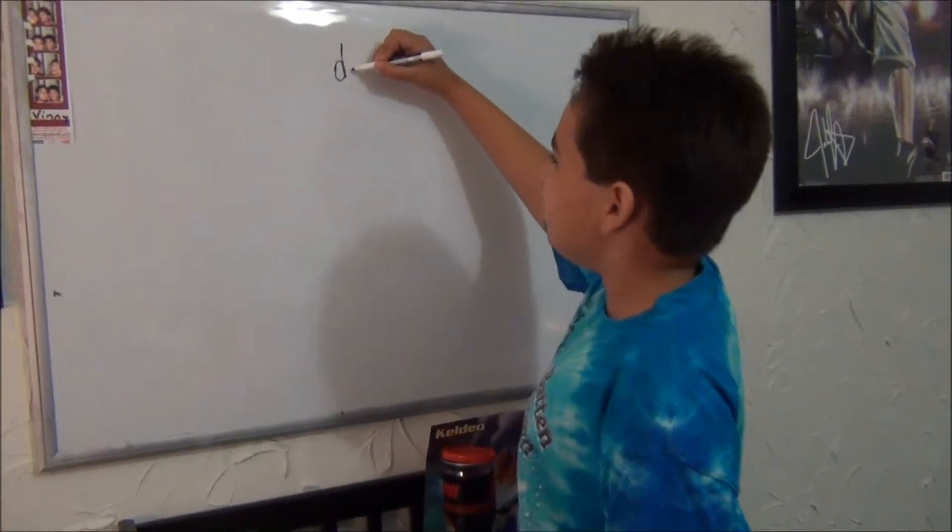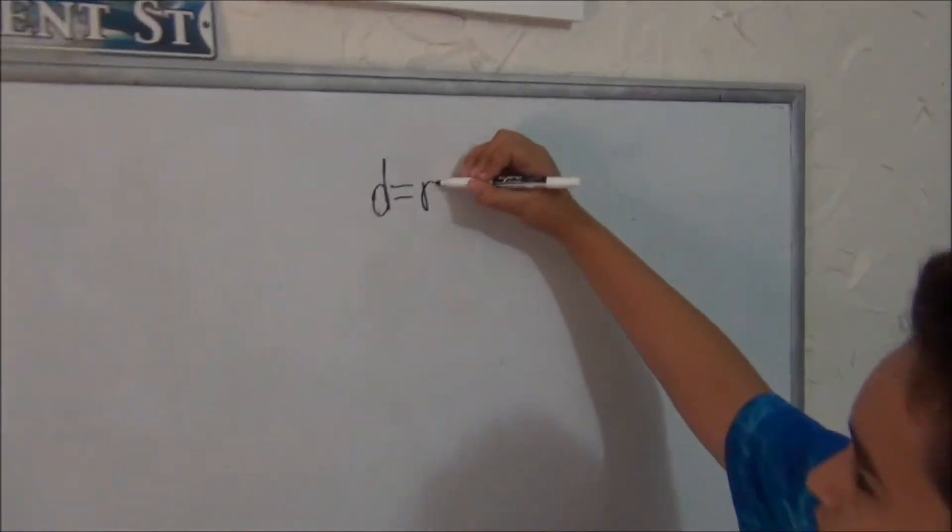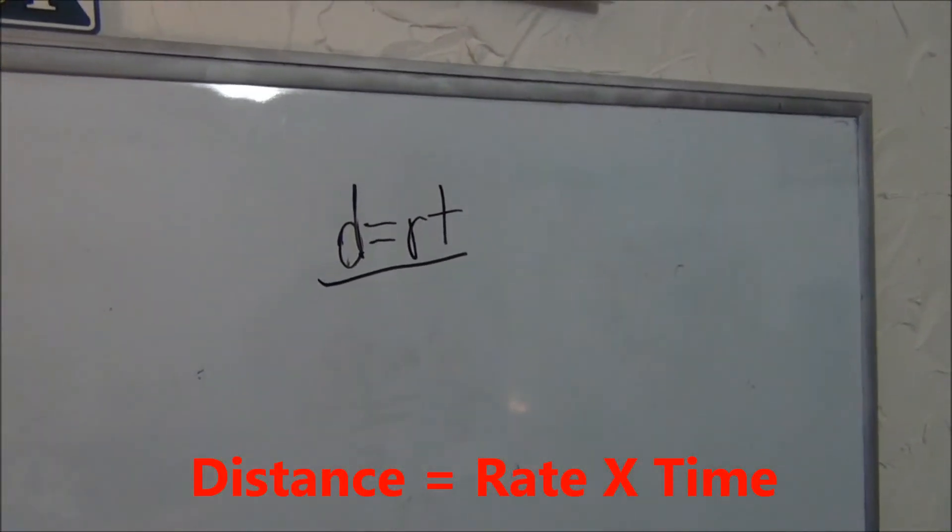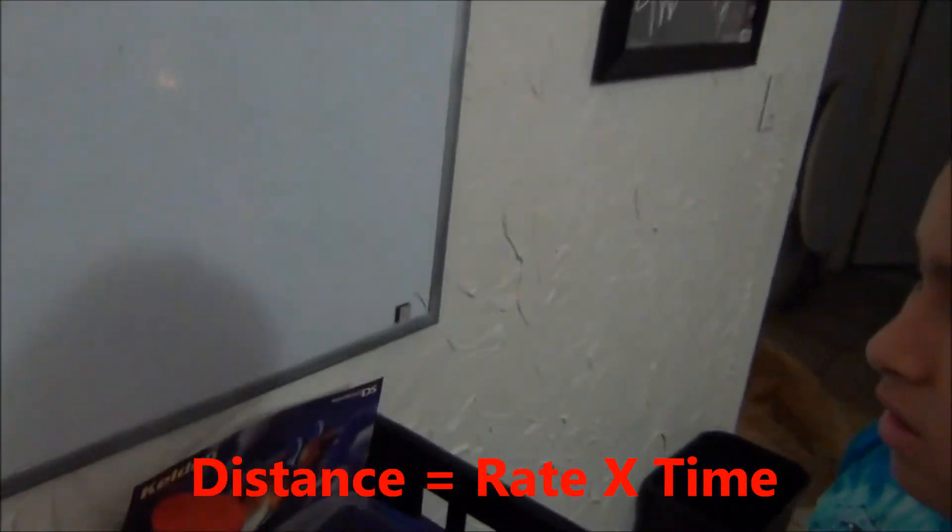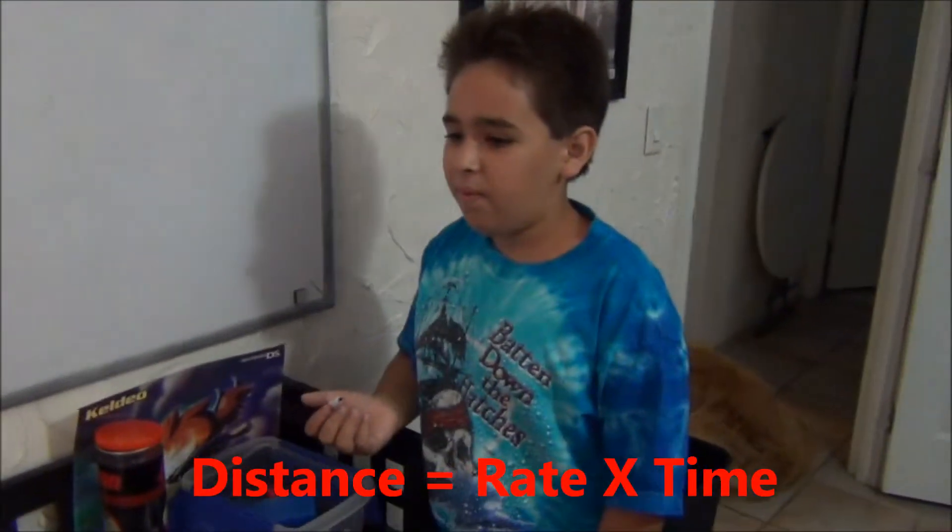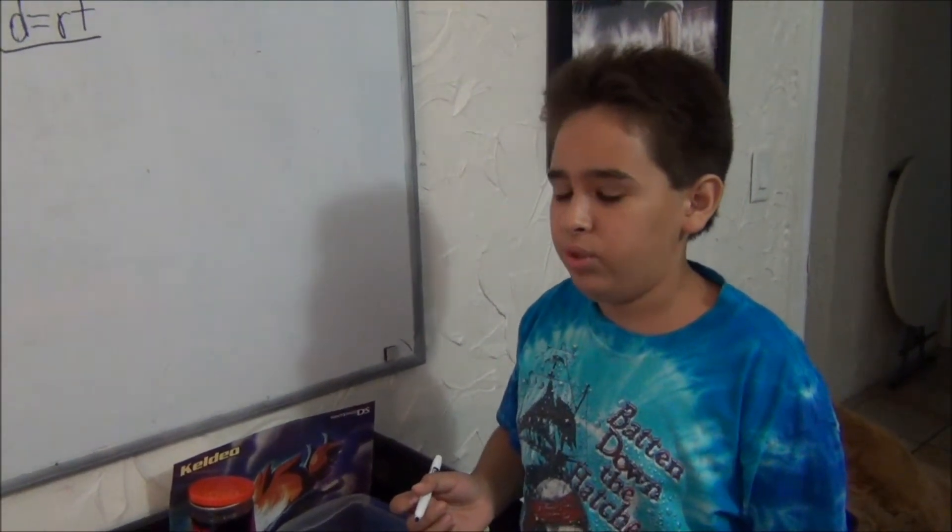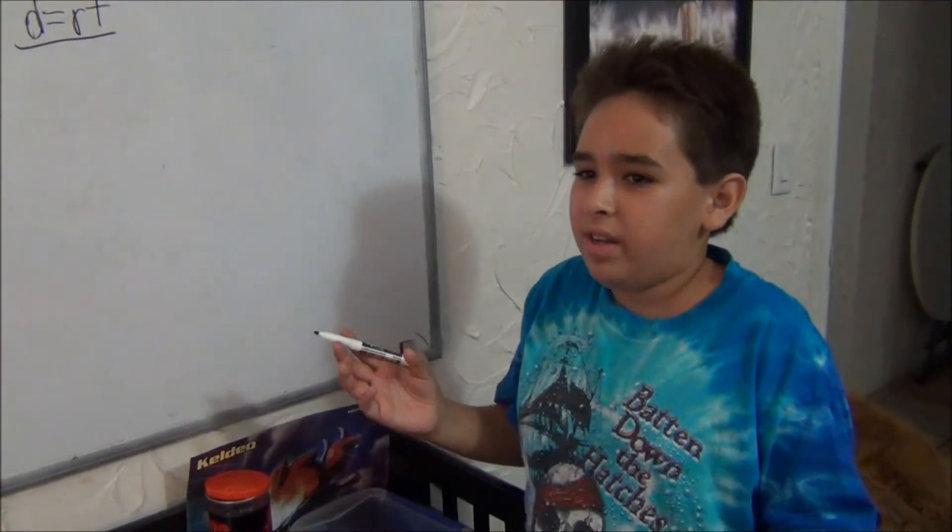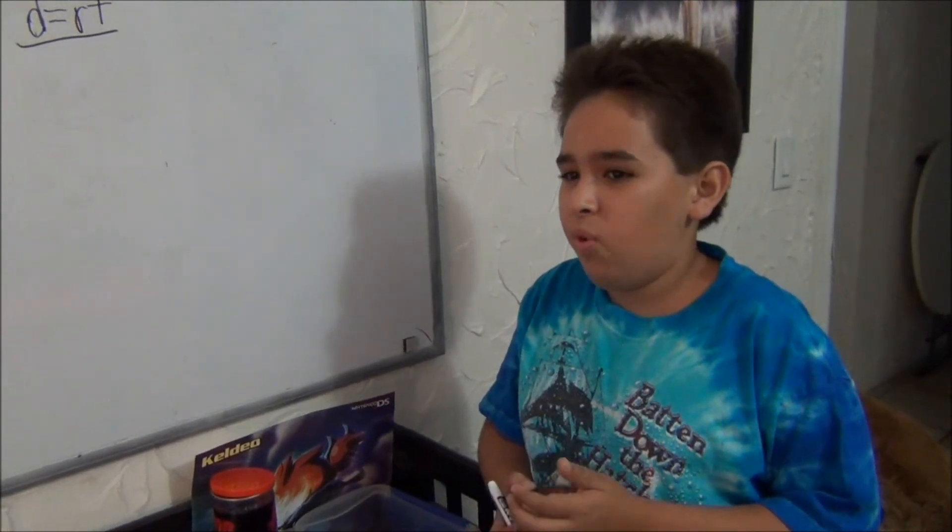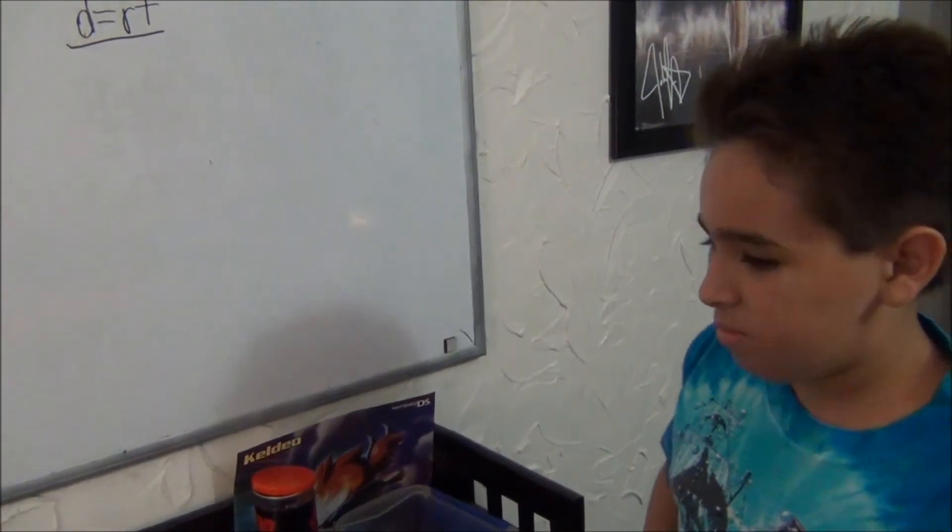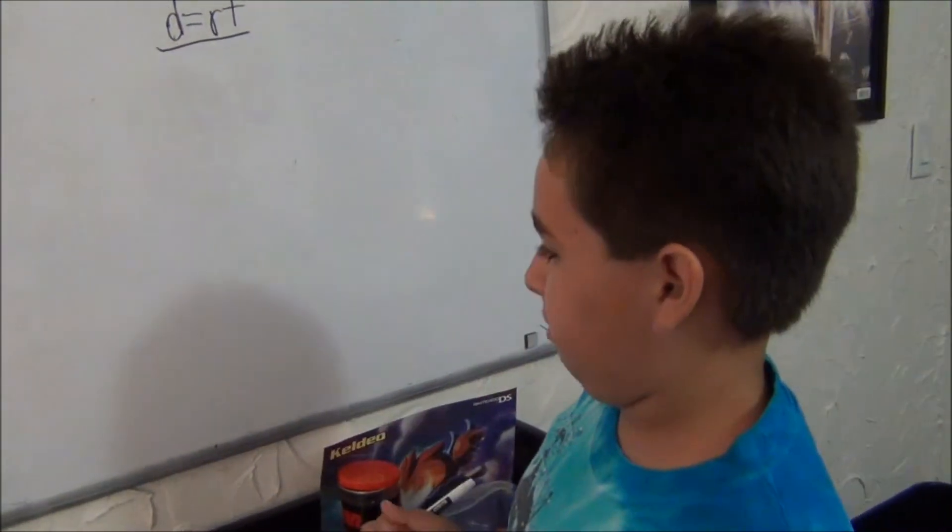Today we're going to be learning that distance equals rate times time, or d=rt. This can be used to find how far a train traveled, or when trains intersected, or maybe at what rate a car was traveling. It's all based on travel, pretty much.